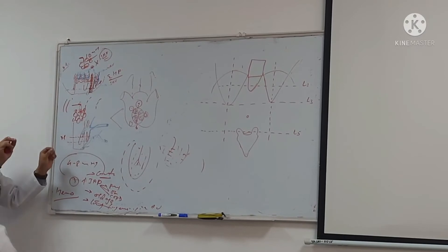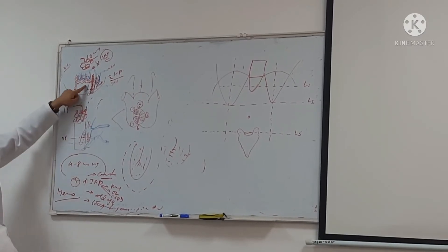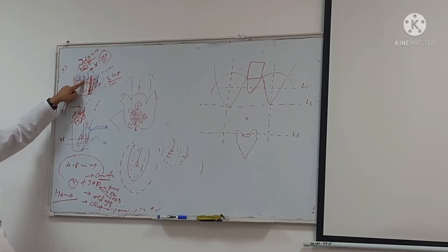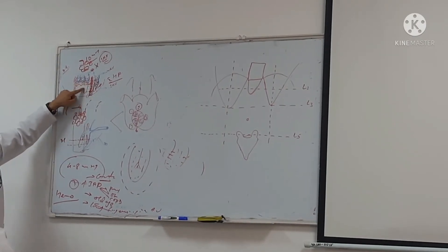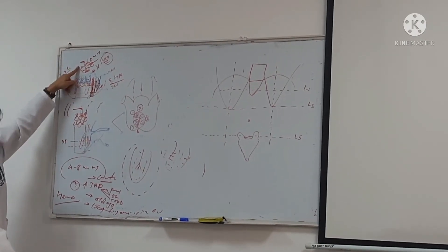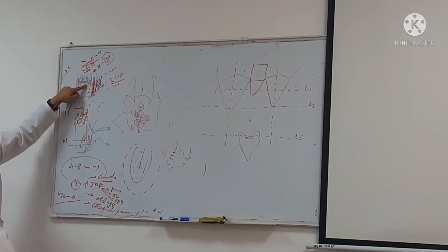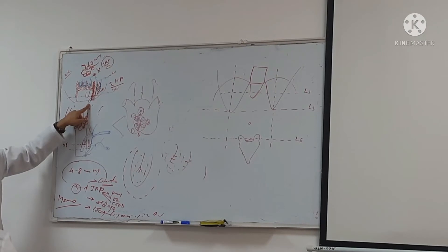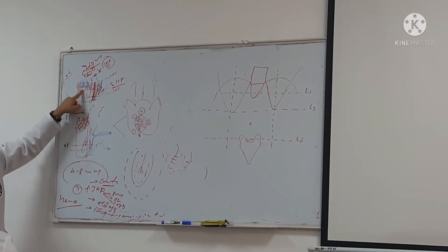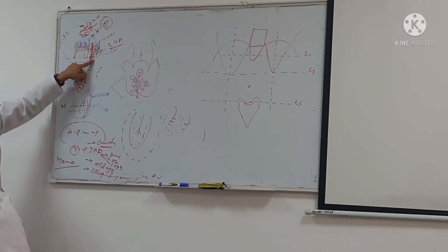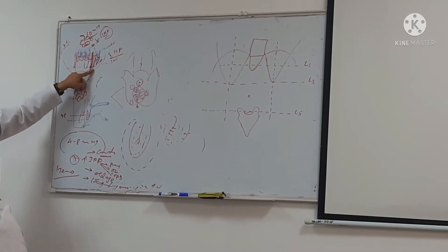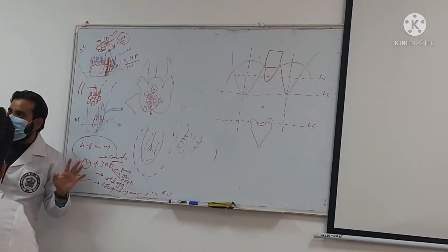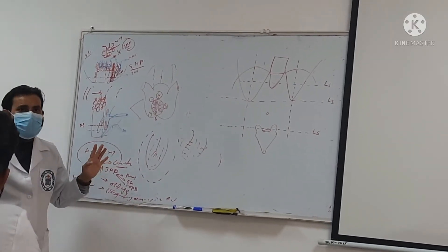So to summarize: internal hemorrhoids occur from the internal hemorrhoidal plexus, which is above the dentate line — less painful. External hemorrhoids occur below the dentate line, from the external hemorrhoidal plexus — more painful.